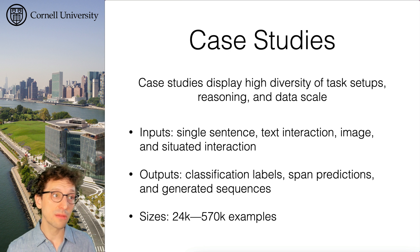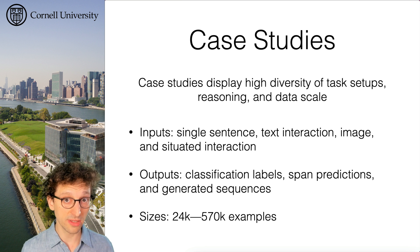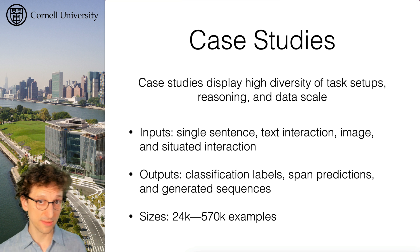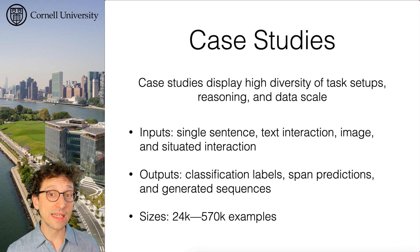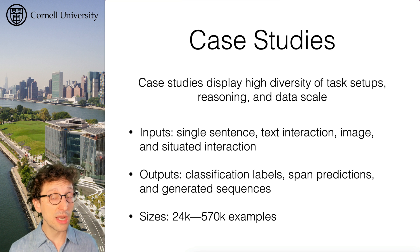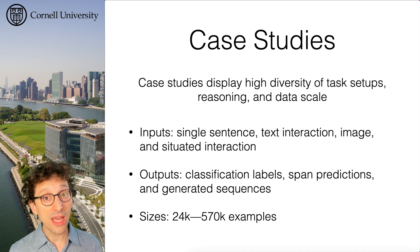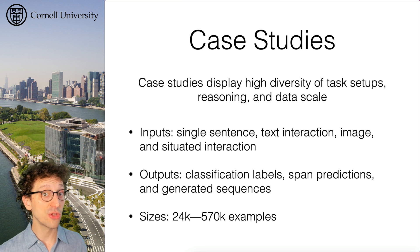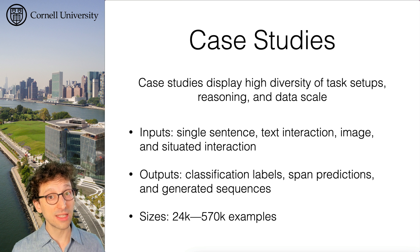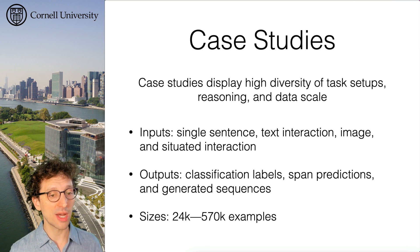The case studies we present in this tutorial display a high diversity of task setups, reasoning, and data skills. The inputs range from single sentences and complete text interactions, images, and all the way to complete situated interactions. The outputs range from classification labels, span predictions, and complete generated sequences. The sizes vary greatly from 24,000 examples in the smallest dataset to over half a million in the largest one.